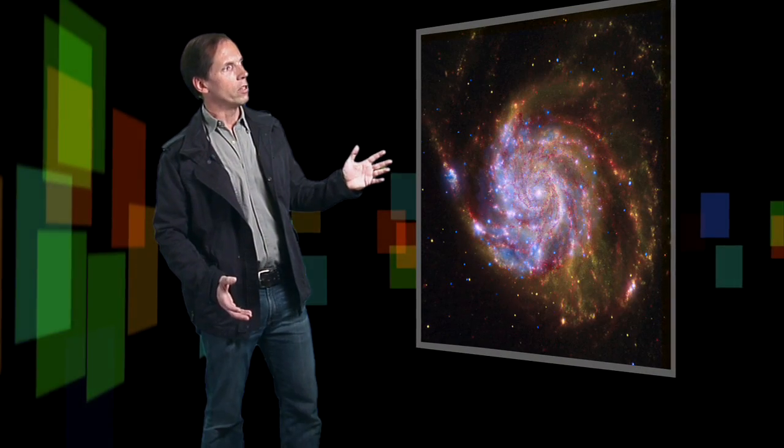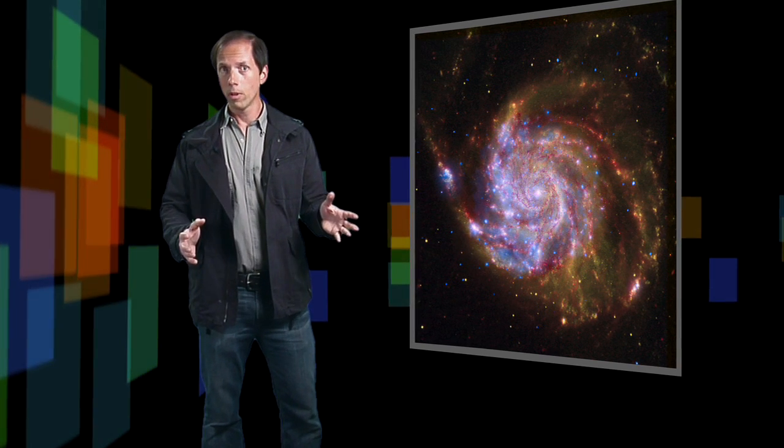The combined image represents three different parts of the spectrum, spanning X-rays, visible, and infrared light. But how do we make an image we can see using light we can't see?